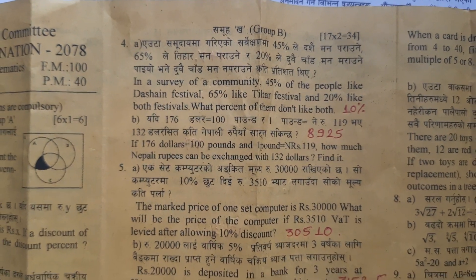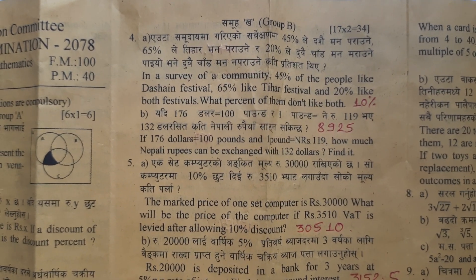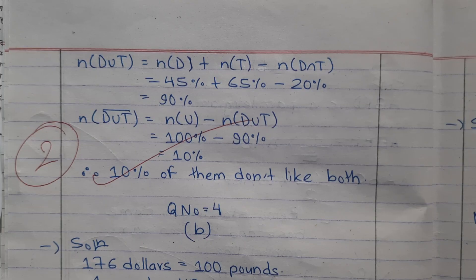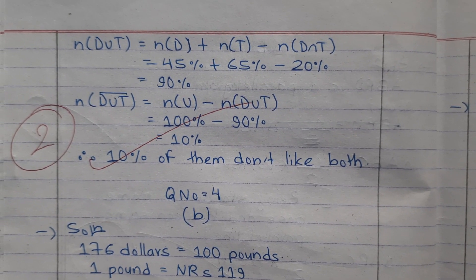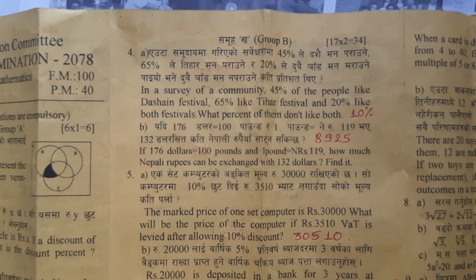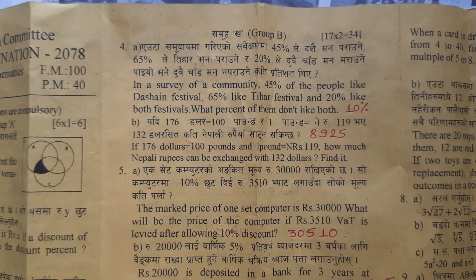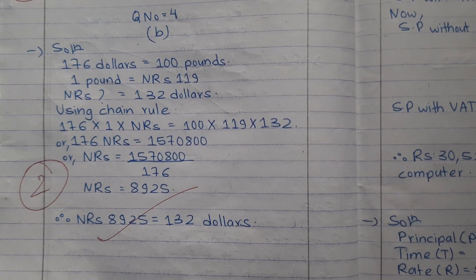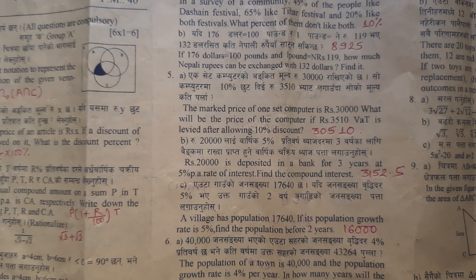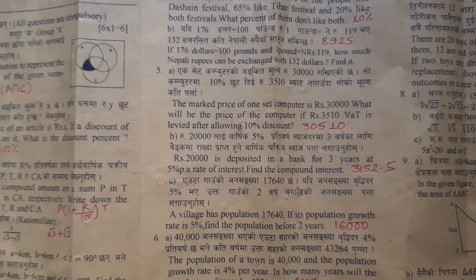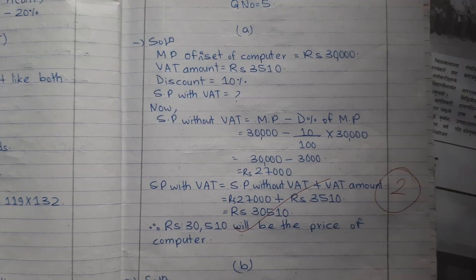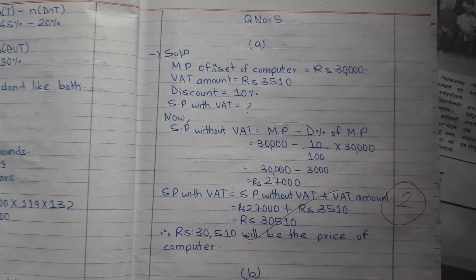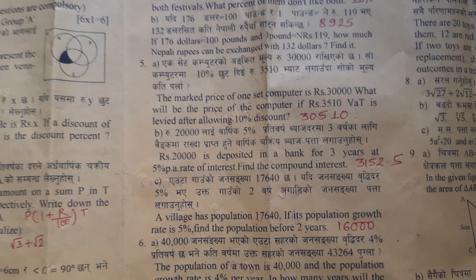Question number four A answer is. Four B answer is. Five A answer is. Five B answer is.